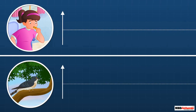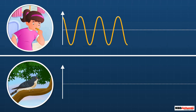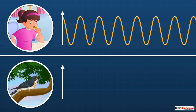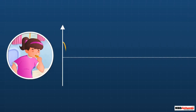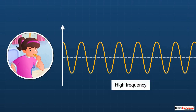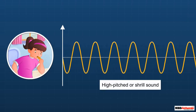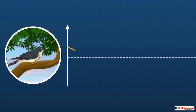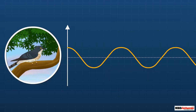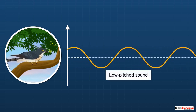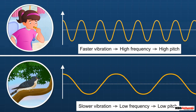Frequency is interpreted by our brain as pitch. It is pitch that allows us to differentiate the frequency of two sounds. For example, a blowing whistle produces waves moving fast, giving a high frequency and thus a high-pitched or shrill sound. In contrast, the cooing of a cuckoo bird has slowly moving waves, giving a low frequency and a low-pitched sound. Thus, the faster the vibration of the source, the higher the frequency and the higher the pitch.